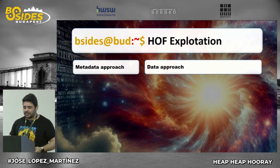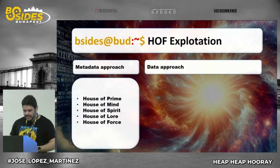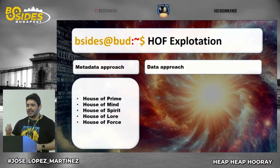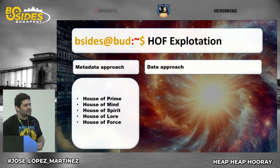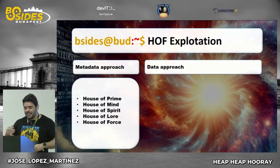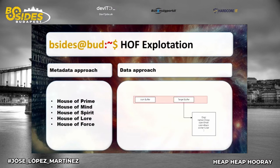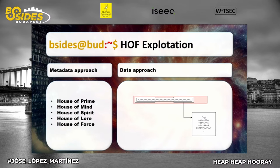In heap overflow exploitation you have two approaches. The metadata approach is more complex — examples from Phantasmagoria involve manipulating chunk metadata to exploit the heap algorithm itself, like House of Force which changes a chunk size to cause an information leak. Today we're focusing on the data approach: overwriting the data section, where a vulnerable buffer overwrites into a target buffer adjacent in heap memory.